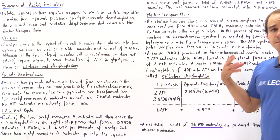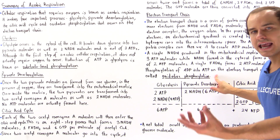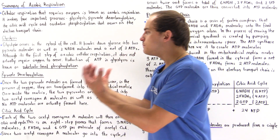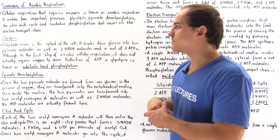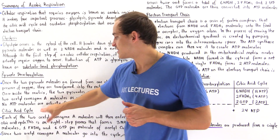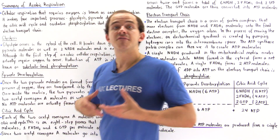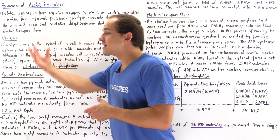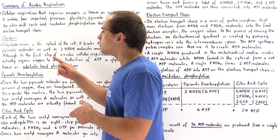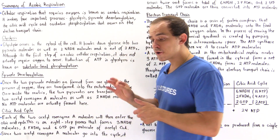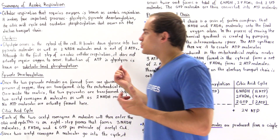The production of ATP molecules using the electron transport chain is known as oxidative phosphorylation. Substrate level phosphorylation occurs in glycolysis and also in the citric acid cycle. Although aerobic respiration means oxygen is present in the cell, glycolysis takes place regardless of whether or not oxygen is present. This implies glycolysis is the first step of both aerobic and anaerobic respiration.